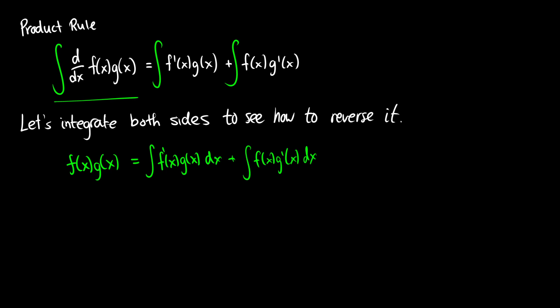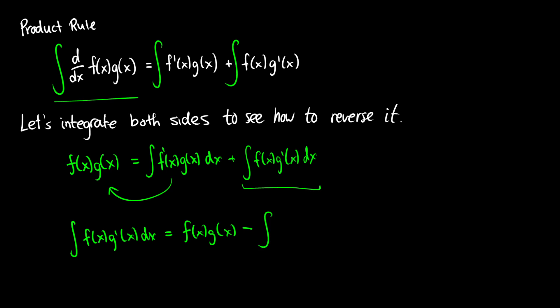We have two integrals here, so let's solve for one of them. Typically we solve for the one on the right, f(x)·g′(x). Rearranging, we get: the integral of f(x)·g′(x) dx equals f(x)·g(x) minus the integral of f′(x)·g(x) dx.